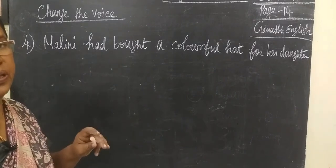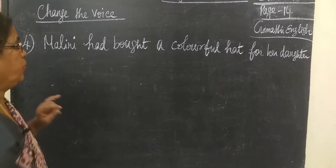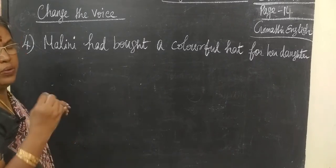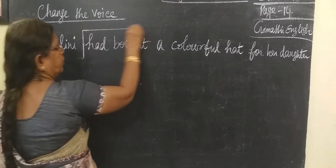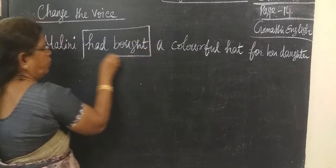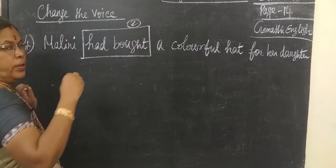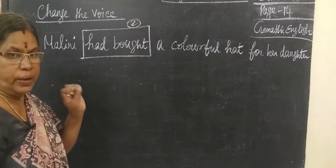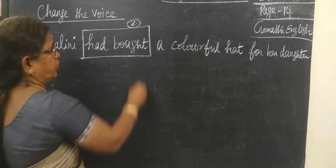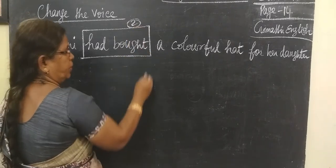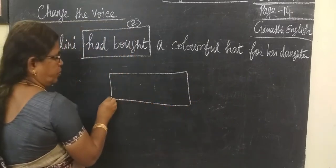You have to see whether it is active voice or passive voice. For that, you will look at the verb. Where is the verb? There are two verbs. The colorful hat has been given — so active voice has been given. It is given in active voice, so you have to change it into passive voice.